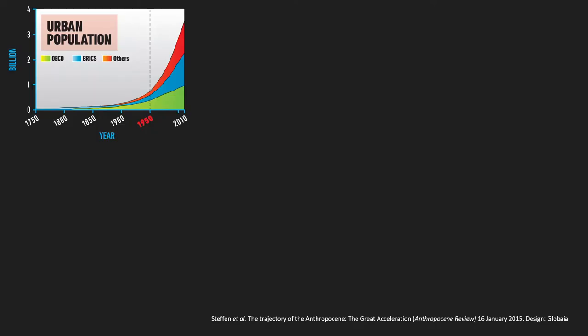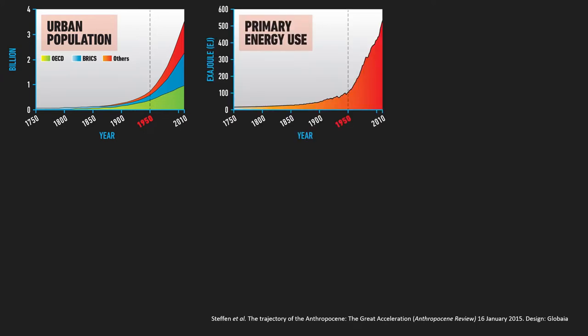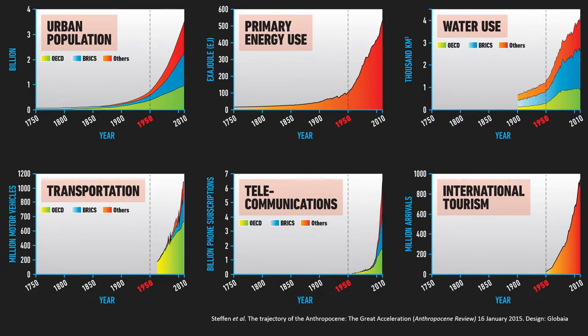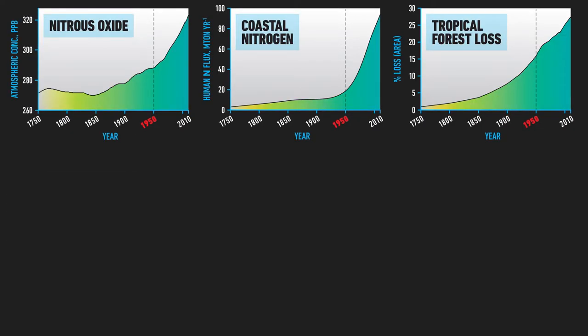Here's the thing — this is urban population since 1750, primary energy use, water use, transportation, telecommunications, international tourism — you'll notice the pattern. And then: nitrous oxide concentration in the atmosphere, coastal nitrogen from fertilization in agriculture, too much nitrogen in our water, tropical forest loss — it looks like there's a slight slowdown, but obviously this is not nearly enough. That curve would have to change course.